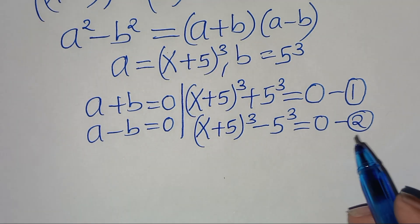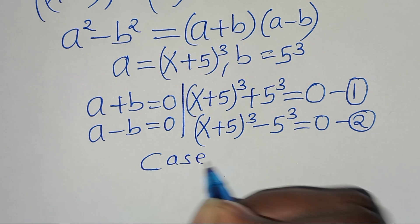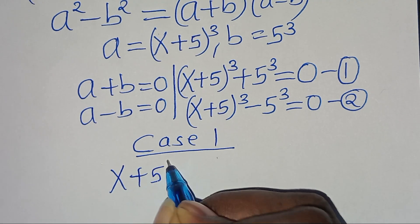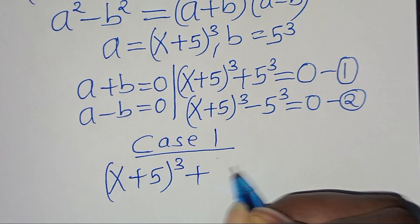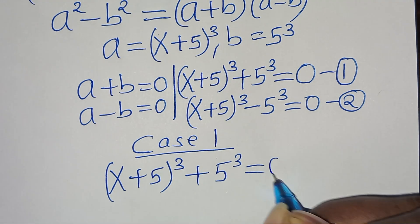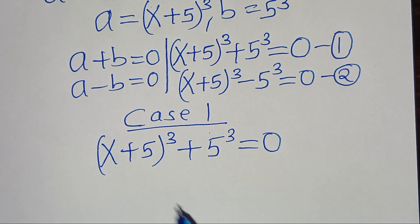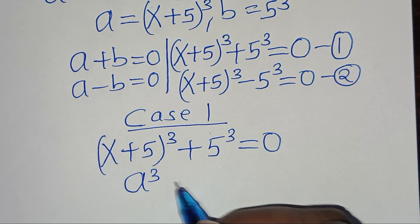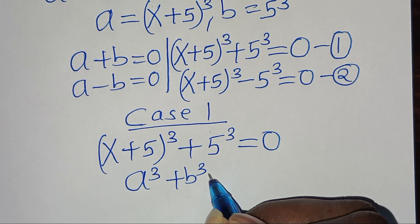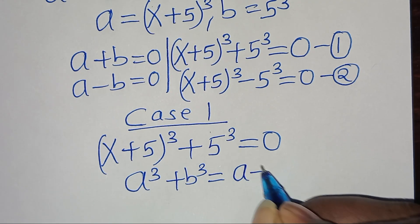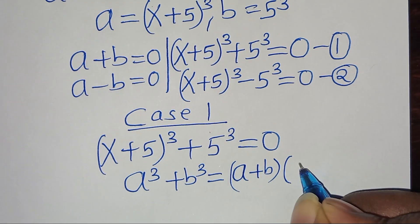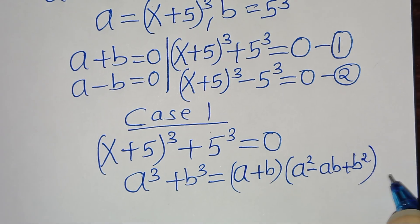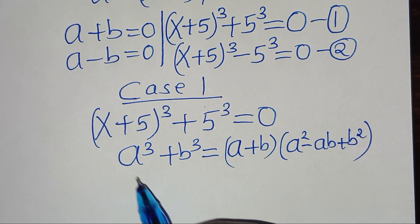Let's start with equation 1, case 1. We have x plus 5 raised to the power of 3, plus 5 to the power of 3, equal to 0. This is in the form of a cubed plus b cubed — the sum of two cubes — which we can express as a plus b, multiplying by a squared minus ab, then plus b squared. Applying this identity: